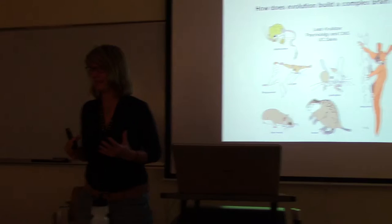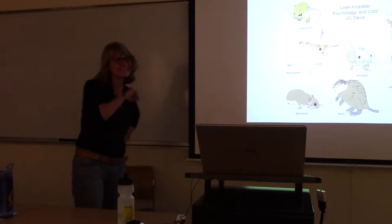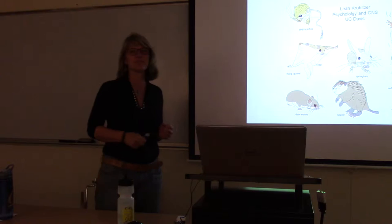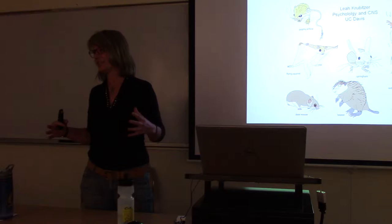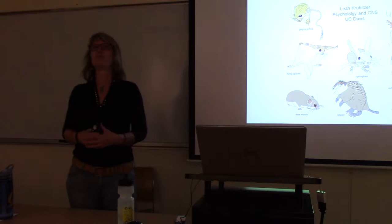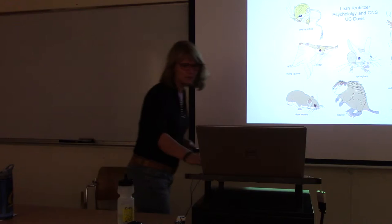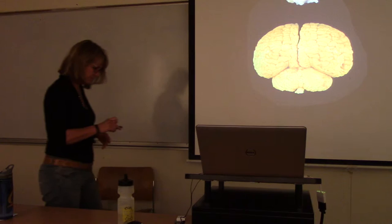Today I'm going to talk about how does evolution build a complex brain. It's a very big question. I always like to put up this first slide of animal bodies because you can't just talk about a brain in isolation — the brain is enslaved by the body. They go hand in hand in terms of normal behavior and how our brains work, but really importantly how our brains evolve. I'm interested in the neocortex.